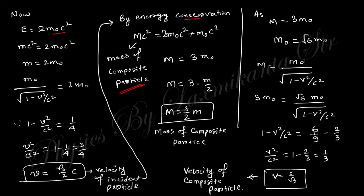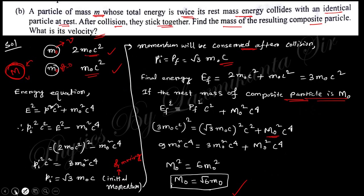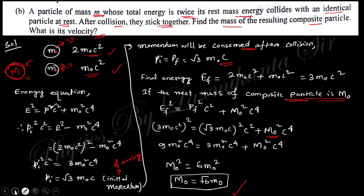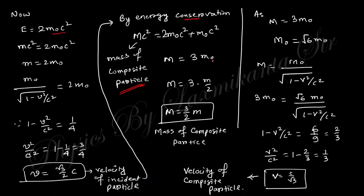By energy conservation, the composite particle energy equals 3*m_0*c², so the composite particle mass is (3/2)*m (since m_0 = m/2). Using M_0 = √6 * m_0 and substituting m_0 = m/2, you obtain the velocity of the composite particle. This gives both the rest mass of the composite particle and its velocity.